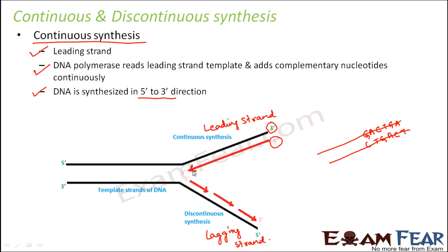When we talk about the leading strand, the DNA gets synthesized in the same direction as the growing replication fork. The replication fork grows in this direction because helicase is moving in this direction. So the direction in which the replication fork is growing is the same as the direction in which continuous synthesis takes place on the leading strand.